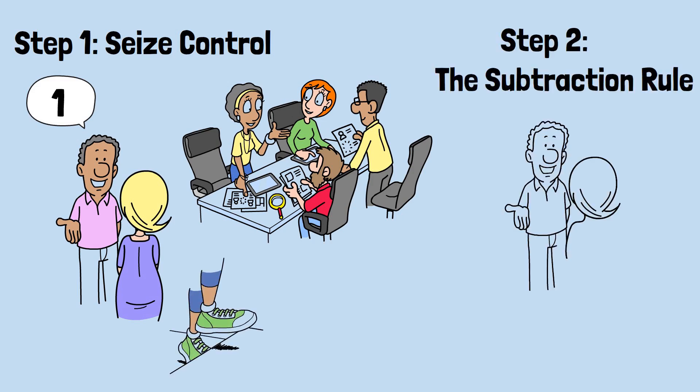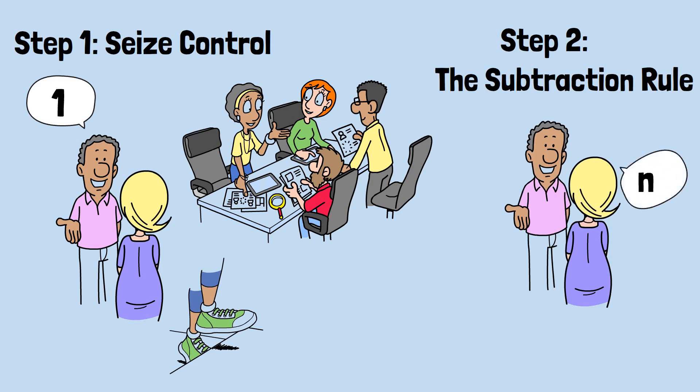Step 2: The subtraction rule. No matter what number your opponent plays next, you subtract their number from 11 to determine your response.